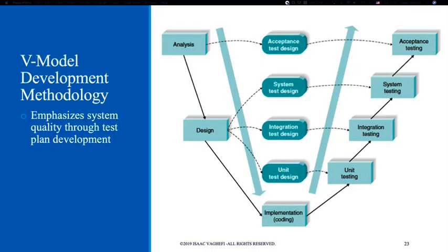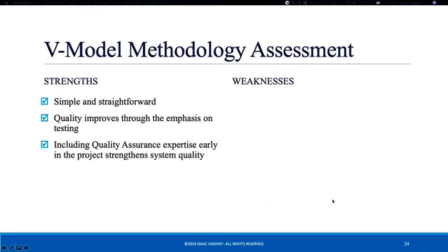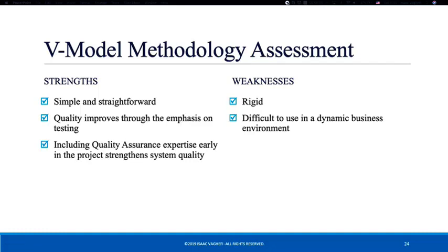V-model is another variation of waterfall where we do analysis, design, and then implementation, but at each stage we also think about the testing phase and start developing a plan for testing. The focus of V-model is mostly on quality assurance to ensure we deliver a high quality product. At the same time, it's very rigid — the more we plan for testing outcomes, the less we can change user requirements, making it very difficult to use in a dynamic business environment.